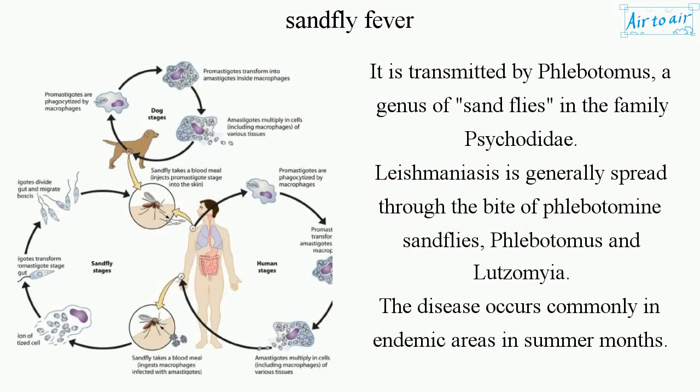It is transmitted by Phlebotomus, a genus in the family Psychodidae. Leishmaniasis is generally spread through the bite of Phlebotomine sandflies, Phlebotomus and Lutzomia. The disease occurs commonly in endemic areas in summer months.